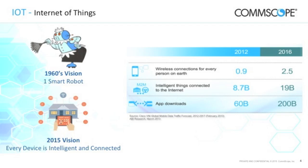IoT is essentially the combination of all devices being connected with each other. You have your car connected, your fridge connected to your smartphone so you can create a shopping list based on what's missing. You have intelligent thermostats managing your home temperature efficiently. All of this is going to be connected with your phone or smart device. A lot of these connections are going to be over an LTE network.